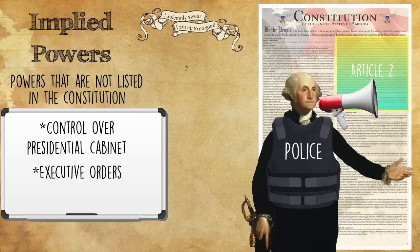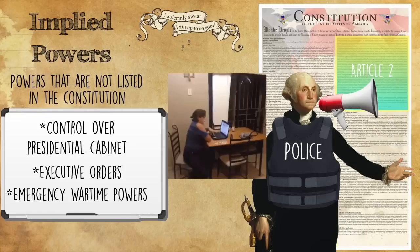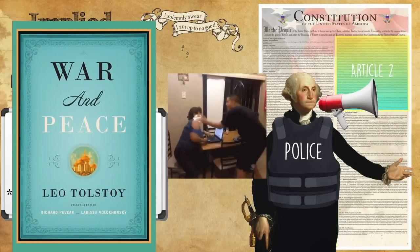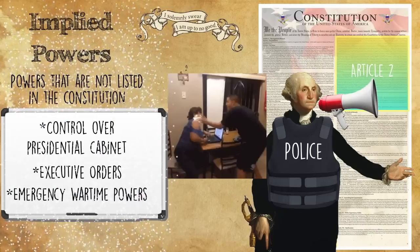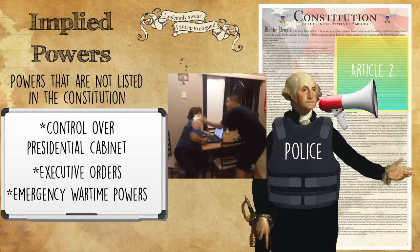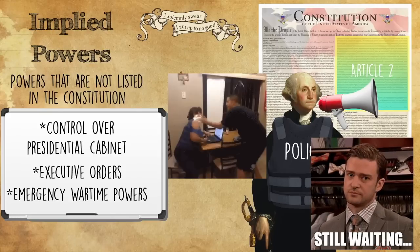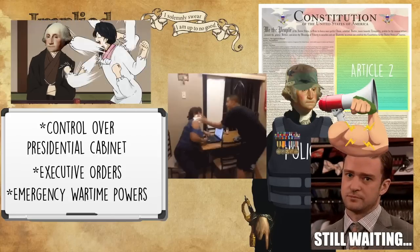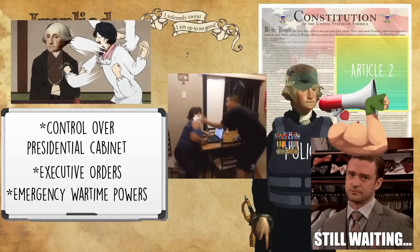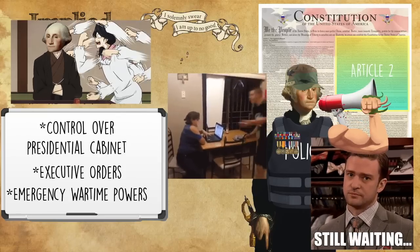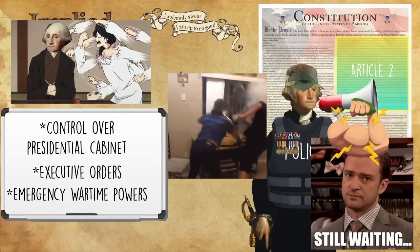Last on the list of implied powers is what we call emergency wartime powers. If the United States of America is attacked, we don't have time for Congress to write war and peace — there's no time for them to discuss and debate going to war. We are in an emergency and need to act now, and the president gets more powers when we're in an emergency situation. This makes a lot of sense — it's just not written in the Constitution.